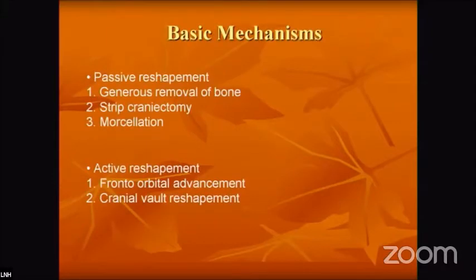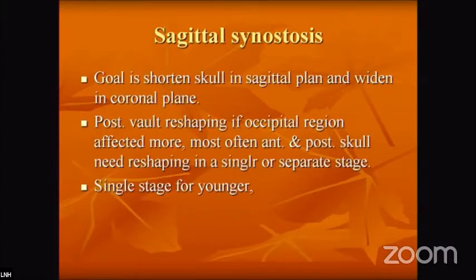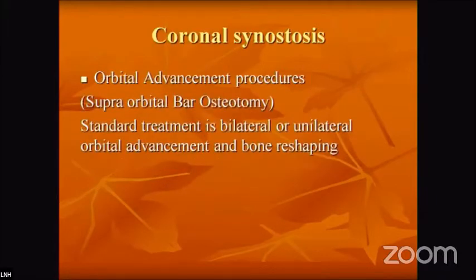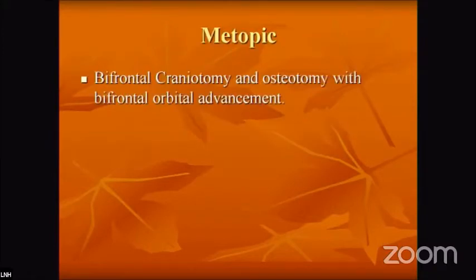Basic surgical mechanisms include generous bone removal by strip cranectomy and morcellation, active reshaping, frontal orbital advancement procedures, and cranial vault reshaping procedures. For sagittal synostosis, the goal is to shorten the skull in the sagittal plane and widen it in the coronal plane, with posterior reshaping if the occipital region is more affected. Coronal synostosis is managed with orbital advancement, supraorbital bar osteotomy, and bilateral or unilateral orbital advancement with bone reshaping. Lambdoid suture involvement is treated with posterior wall reshaping, and metopic synostosis with bifrontal craniotomy, osteotomy, and bifrontal orbital advancement.